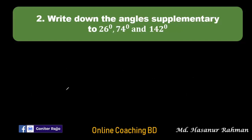Now number two says write down the angle supplementary to 26 degrees, 74 degrees and 142 degrees. Supplementary angle means if the summation of two angles is 180 degrees then we can say one angle is supplementary to another one. So we have to subtract 26 degrees, 74 degrees and 142 degrees from 180 degrees.